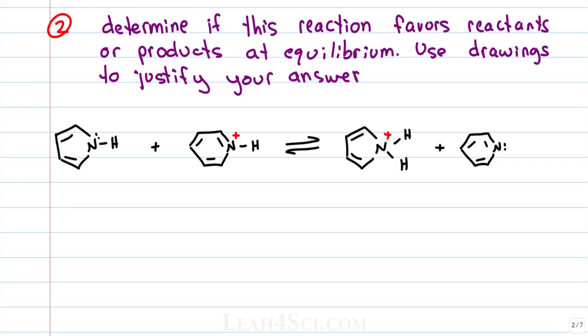For question 2, we're asked to determine if this reaction favors reactants or products at equilibrium and we're told to use drawings to justify the answer. First, we need to know what kind of reaction we have and there appears to be a positive charge and a proton that are moved from reactants to products. We have a 5-membered ring that's neutral forming a 5-membered ring that's positive and a 6-membered ring positive forming a 6-membered ring that's neutral.